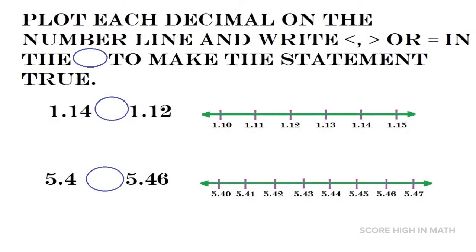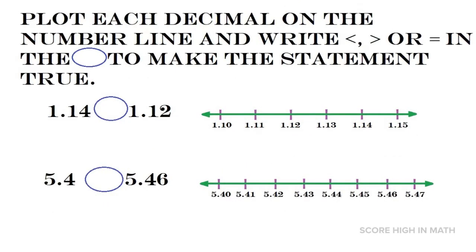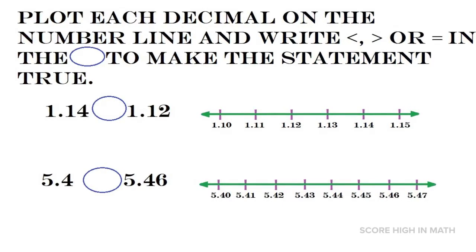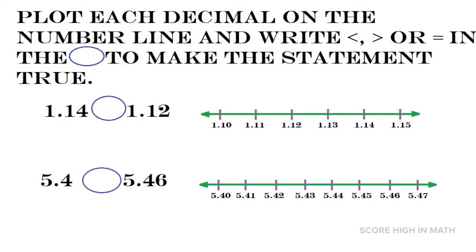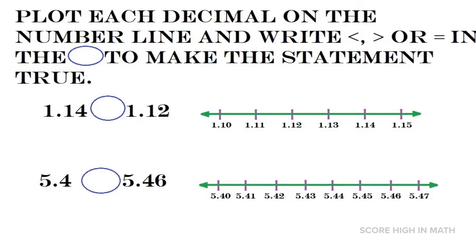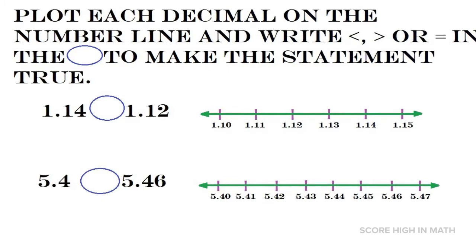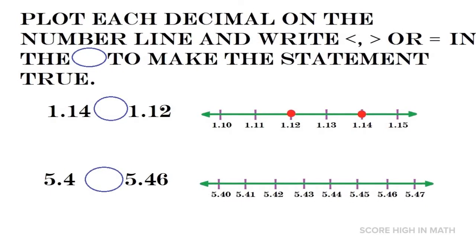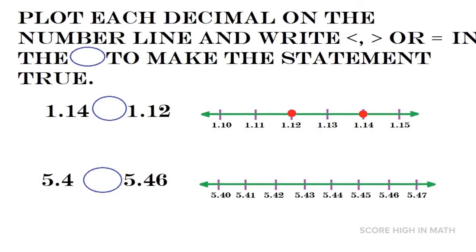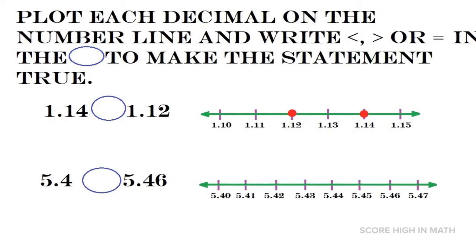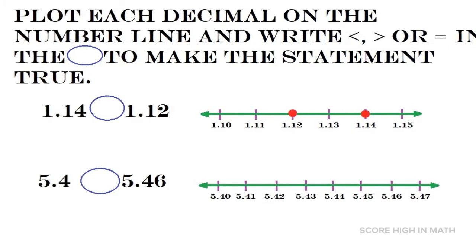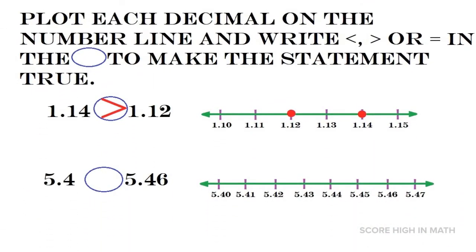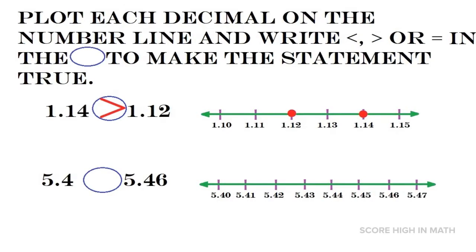Let us work on another example. Plot each decimal on the number line and write less than, greater than, or equal to in the circle to make the statement true. For number one, we compare 1.14 and 1.12. We plot both on the number line. Since the number going to the right is greater, 1.14 is greater than 1.12.